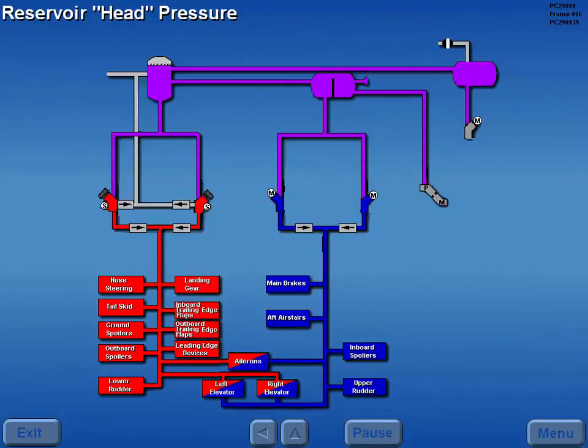A positive fluid supply to the pumps is assured by applying bleed air to the System A reservoir whenever the number one and or two engines are operating. Head pressure is then maintained in the System B and standby reservoirs through the connecting lines.